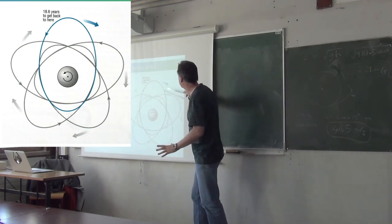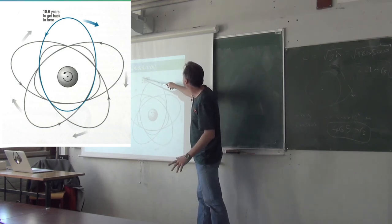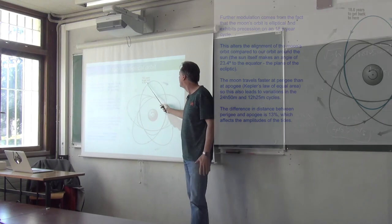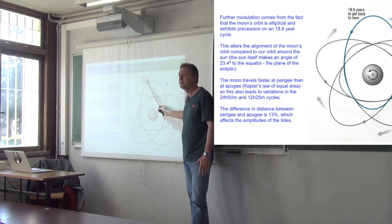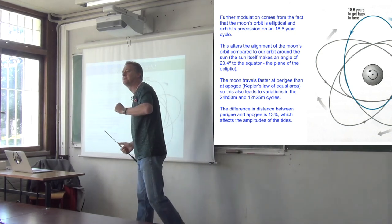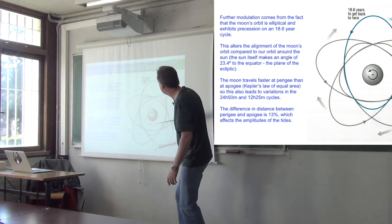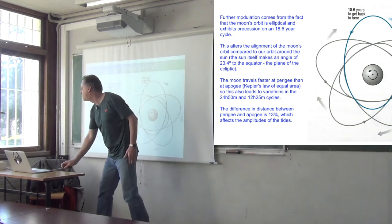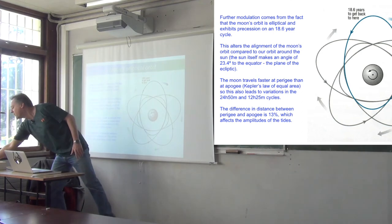Except this ellipse is not actually fixed in space. It has an 18.6-year precession period as well. So there's another timescale, a very long timescale of variation of the tides, 18.6 years. Now, we see more and more timescales coming into this now. Look, there's a 13% difference in the distance to the moon. That's going to change the period of the tides as well.